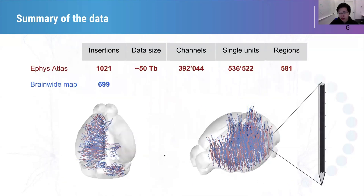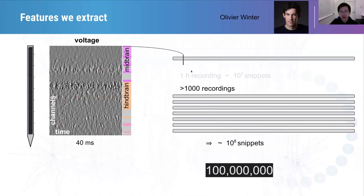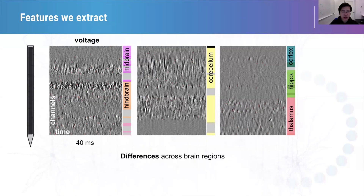Combining all the recordings together in IBL collaboration, we have reached in total about 1,000 insertions, which cover a large fraction of the mouse brain. To extract EFACE features, we select random steps of 14 milliseconds from single recording sessions, and we then combine all the data together to reach about 100 million snaps. By analyzing those voltage data, we can find a lot of differences across brain regions, which implies the importance of characterizing such features across the entire mouse brain.